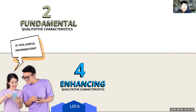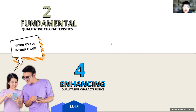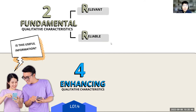So there are two fundamental qualitative characteristics and four enhancing qualitative characteristics. The fundamental ones are our primary criteria, and the four enhancing would be our secondary criteria. The two fundamental characteristics are: relevant and reliable — the two R's.